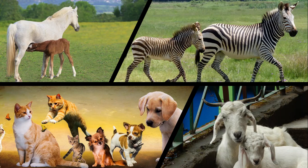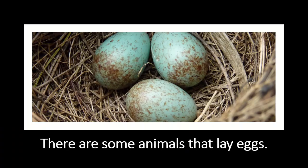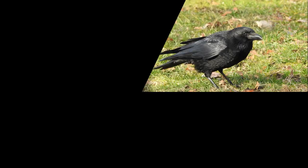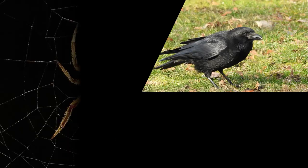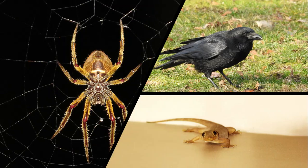These animals grow in their mother's womb, in their mother's stomach, and they come out of the mother's tummy. But some animals lay eggs — like crows, spiders, lizards. They grow through the egg; they lay eggs.